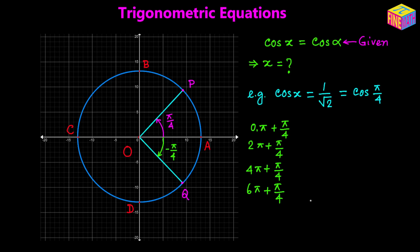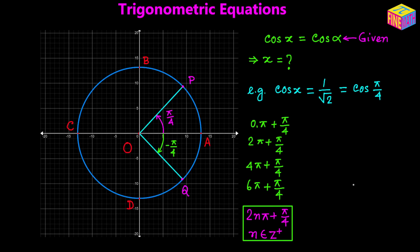Here we can see a pattern: the angle is an even multiple of pi plus pi over 4. So we can write it as 2n times pi plus pi over 4, where n is a positive integer.